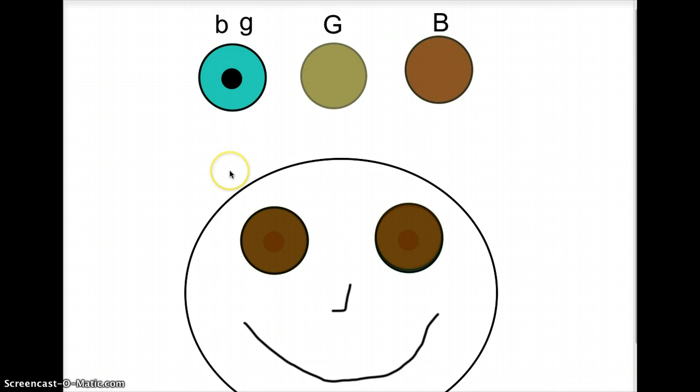And so really, all eye color really is, is you start off with essentially blue eyes if you have nothing, green eyes if you have a little bit, and brown eyes if you have a lot. And like I said, there's all different shades and stuff like that that make it more complicated, but that's the general gist of it.